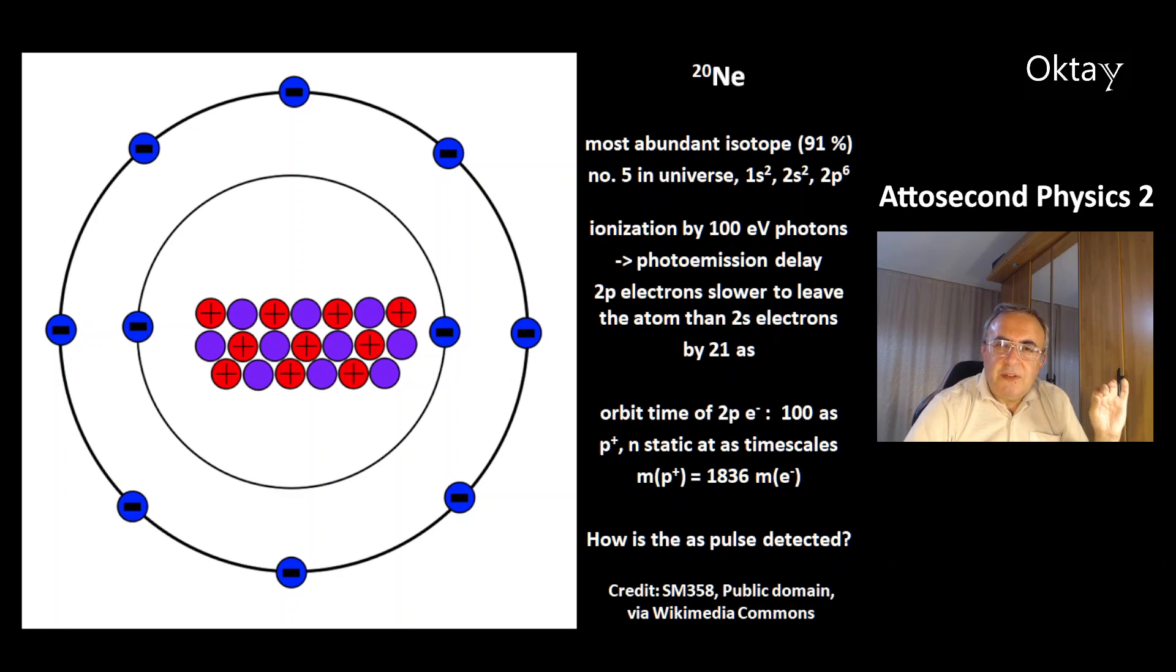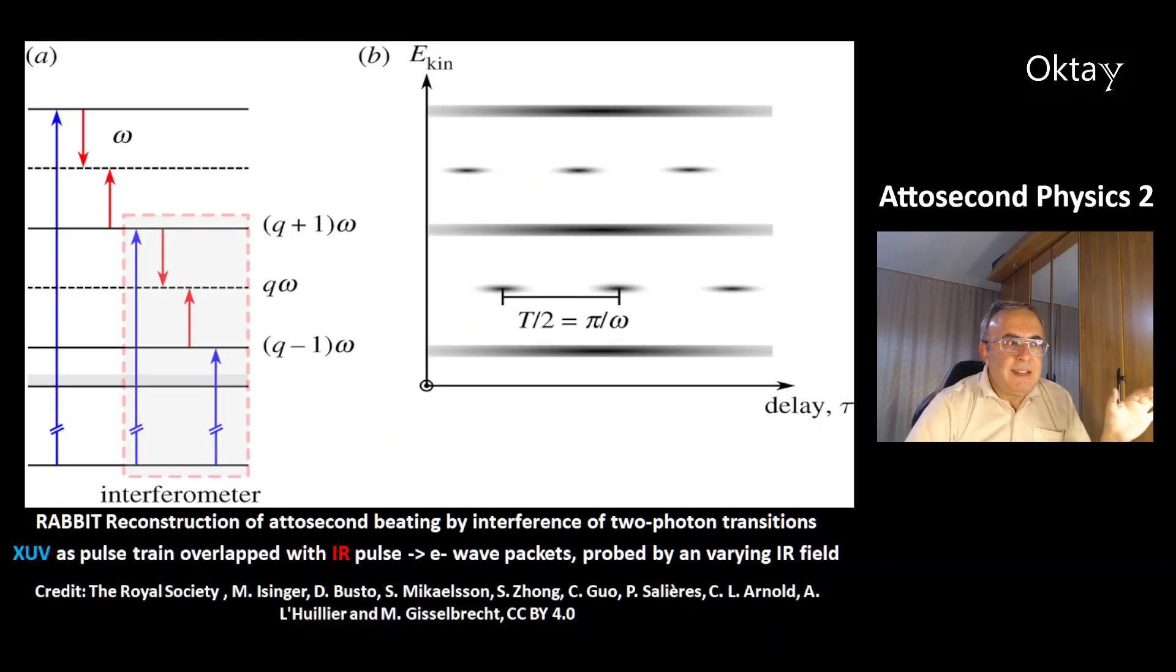The question is how is the attosecond pulse detected? This is one method called RABBIT. That's the reconstruction of attosecond beating by interference of two photon transitions. The electron is hit with extreme UV light. It has a pulse train that lifts it to the high orbitals.